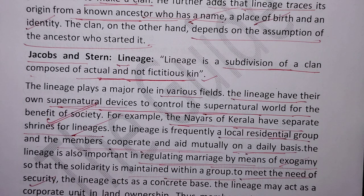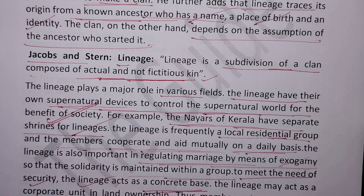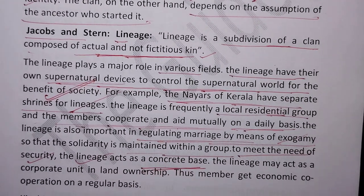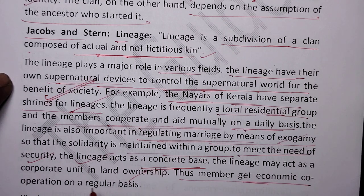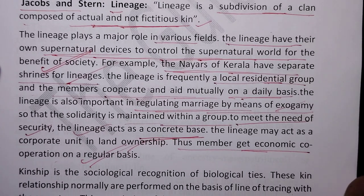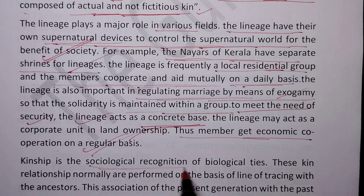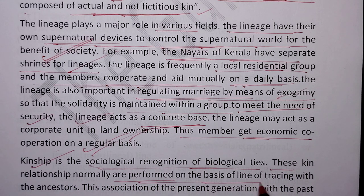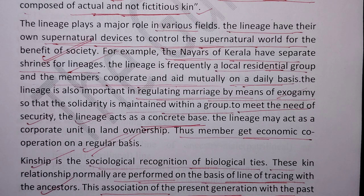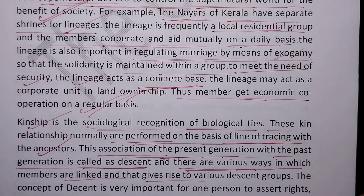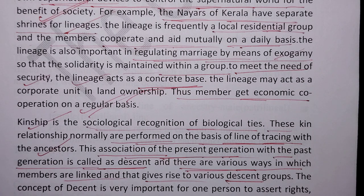To meet the need of security, the lineage acts as a concrete base. The lineage may also act as a corporate unit in land ownership. Kinship is the sociological recognition of biological ties. These kin relationships are normally performed on the basis of line of tracing with ancestors. This association of the present generation with the past generation is called descent, and there are various ways in which members are linked, giving rise to various descent groups.